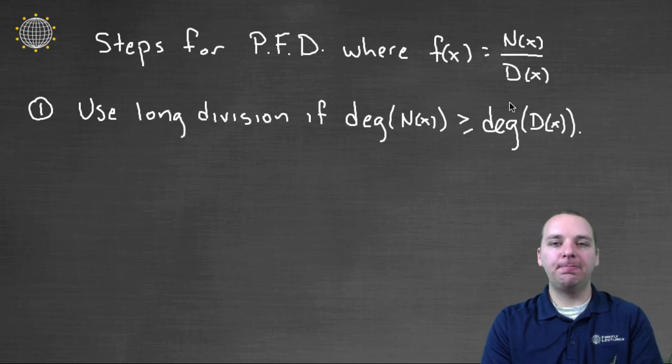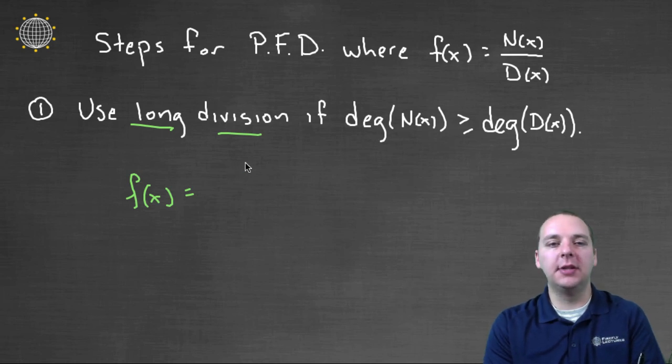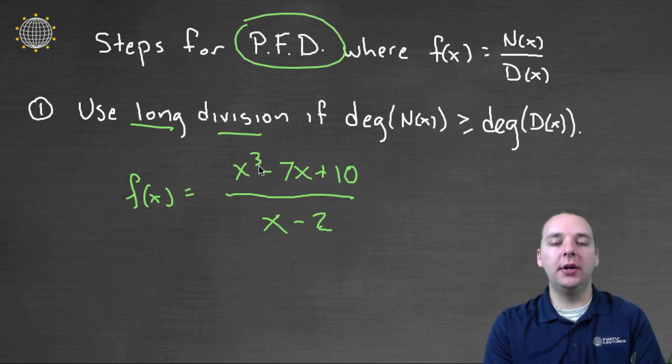Alright, so here's the steps. First of all, if this is what we call an improper fraction, if the numerator has a larger degree than the denominator or even equal to, then you're going to use long division. I'm not going to cover long division in this video. This is an algebra process where you would literally divide the smaller denominator into the larger numerator. I'm not going to work an example, but I'll show you an example. Like if you had x cubed minus 7x plus 10 divided by x minus 2, you could not do partial fraction decomposition on this guy yet, because the numerator is bigger than the denominator. So you would literally first need to divide x minus 2 into that denominator before you even could possibly do partial fraction decomposition if it was even necessary. So that's what I'm talking about. The degree of the numerator is bigger than the denominator. You need to do long division first.